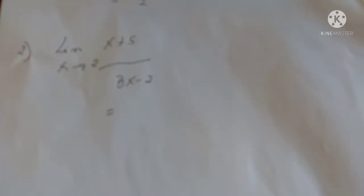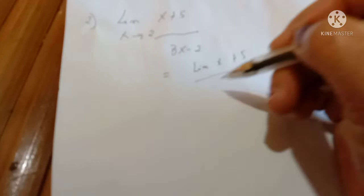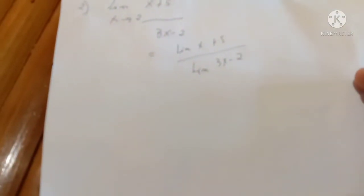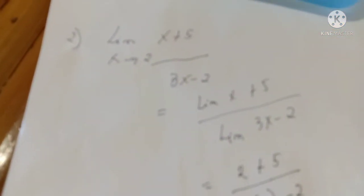Number two: find the limit of (x + 5) over (3x − 2) when x approaches 2. We apply the definition, separating it as the limit of (x + 5) over the limit of (3x − 2). Substituting x = 2: (2 + 5) over (3×2 − 2), which gives 7 over (6 − 2), so 7 over 4. The limit of (x + 5) over (3x − 2) when x approaches 2 is 7/4.